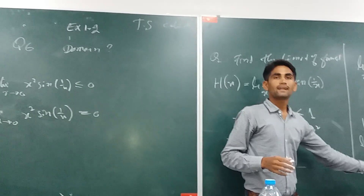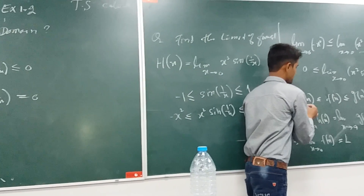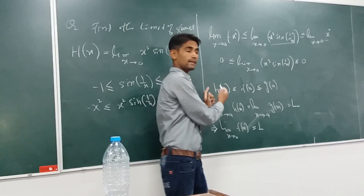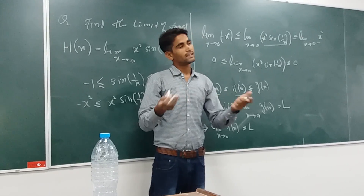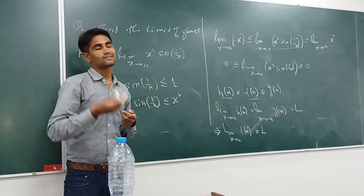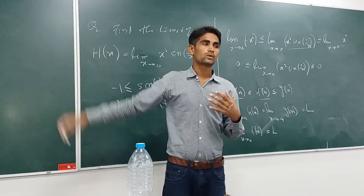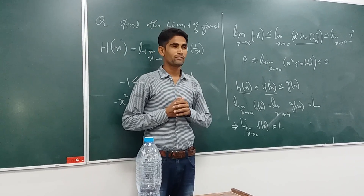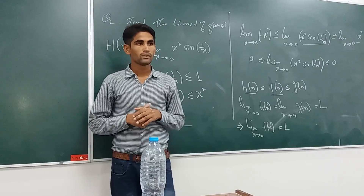This is known as the sandwich theorem. When this theorem is applied — if H of x is less than or equal to F of x, and F of x is less than or equal to G of x, and the limits of H of x and G of x are equal — then their limit will also be equal to the limit of F of x. In our next session, inshallah, we will discuss further problems regarding functions, carrying on with James Stewart Calculus Exercise 1.2. This problem was from a student, Mohamed Haneev. Thank you very much.